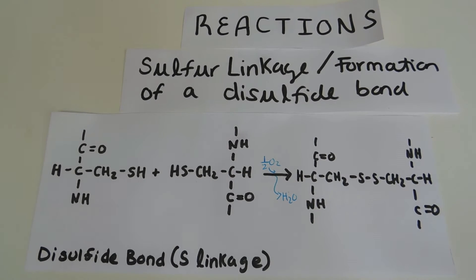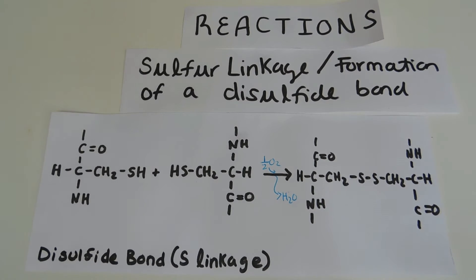For the MCAT, it's not going to ask you to draw this reaction. It might be embedded within a passage with some questions, or you might have direct questions about whether this is oxidation or reduction. But it's good to know what's happening: two thiol groups, oxidation, sulfur linkage between two cysteine residues.